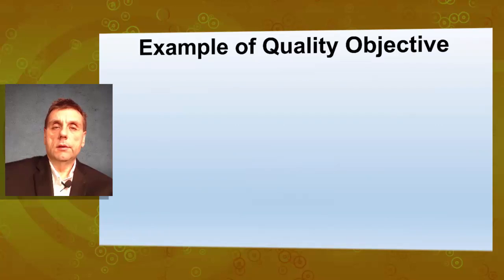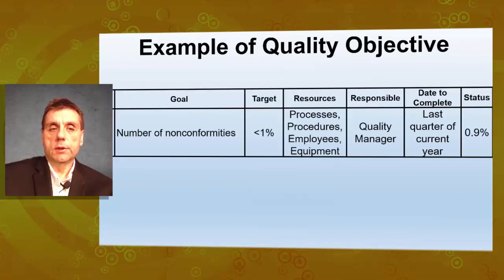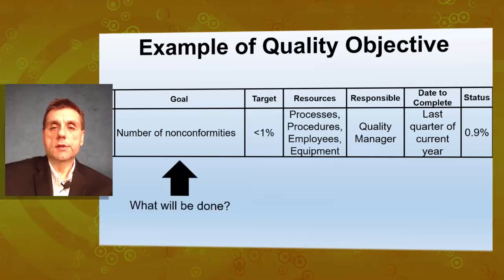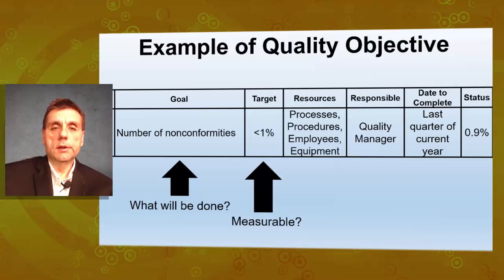Let's look at one example of a quality objective. The objective is the number of nonconformities, with a target of less than 1%. The resources involved include processes, procedures, employees, and environments. Looking at the goal — what will be done — the answer is reducing the number of nonconformities, with a measurable target of less than 1%, following the guidelines and requirements of ISO 9001-2015.